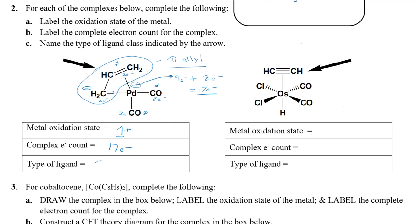And then finally, we already said that is a pi allyl ligand. You just have to know that. There are only 10 of them. Make some flashcards. Whatever you got to do, you can figure it out.